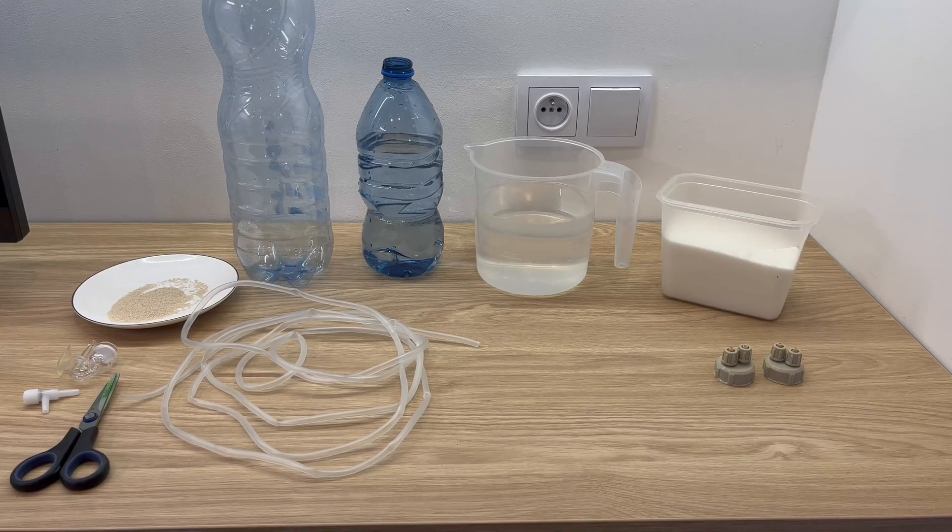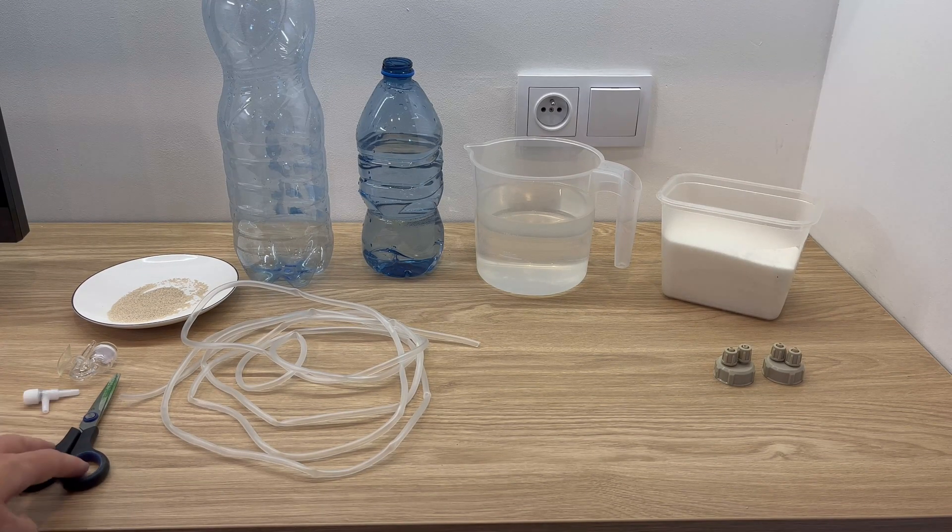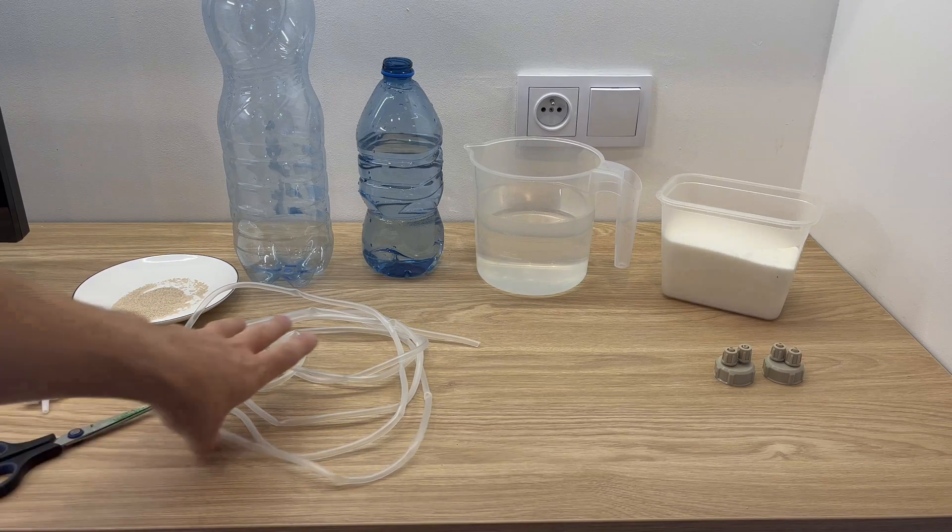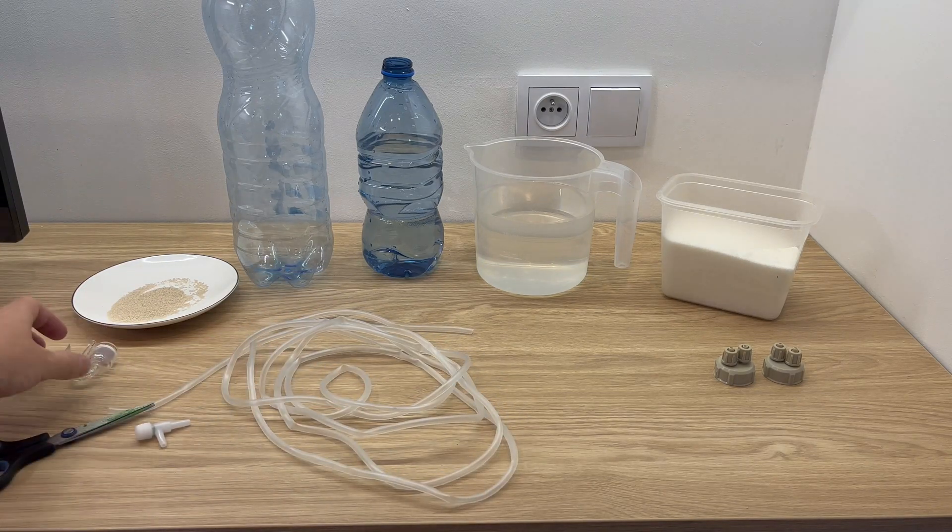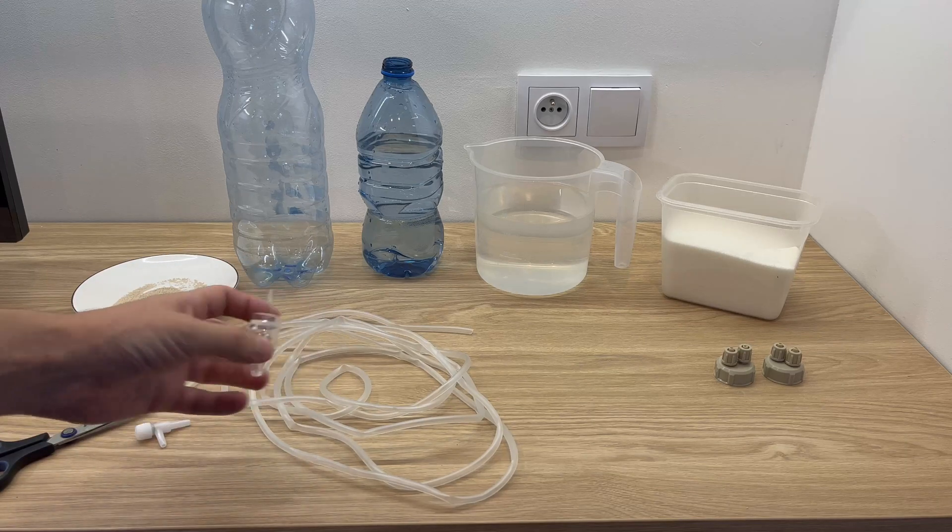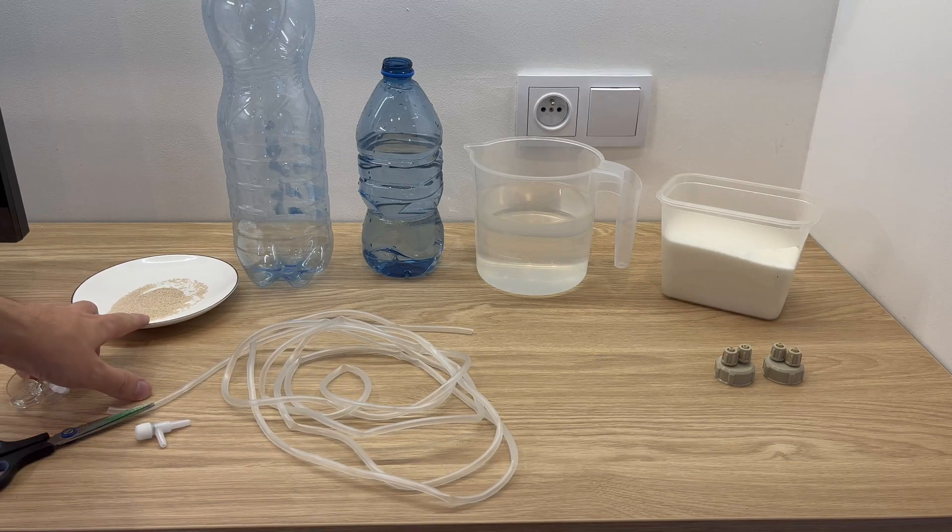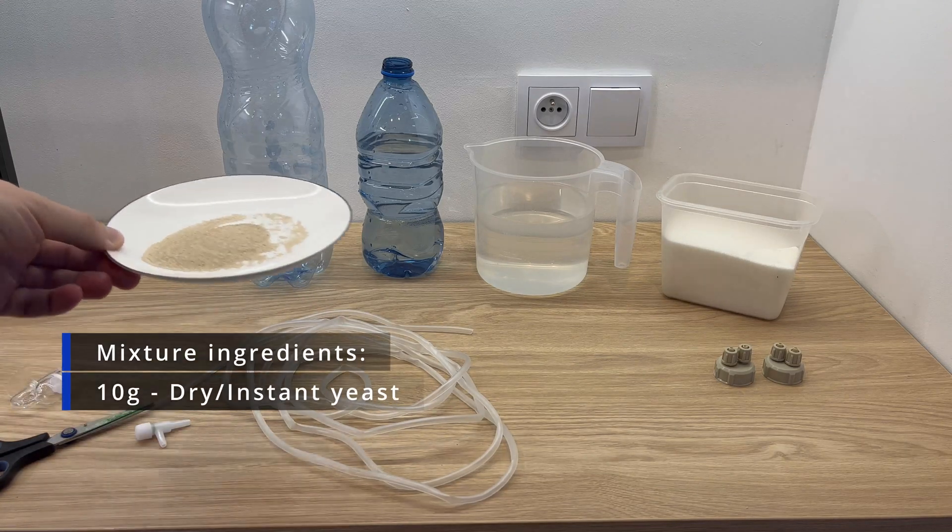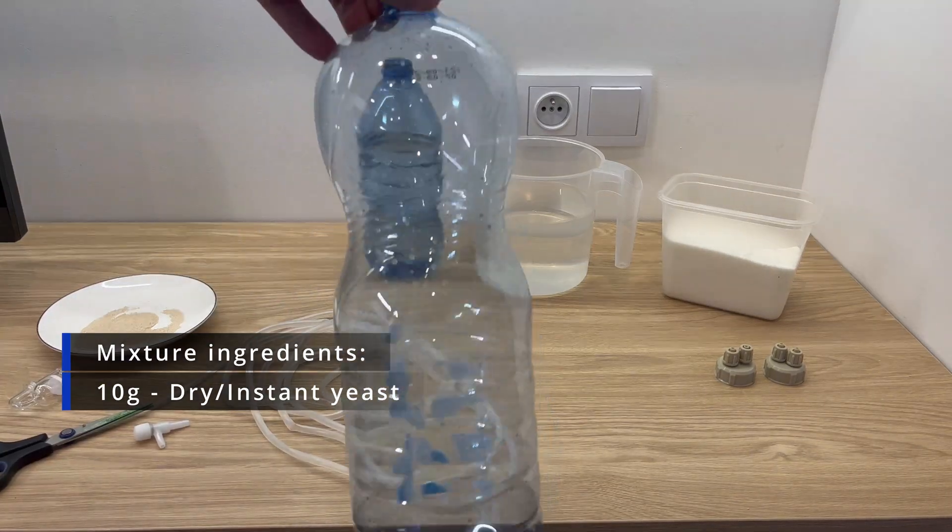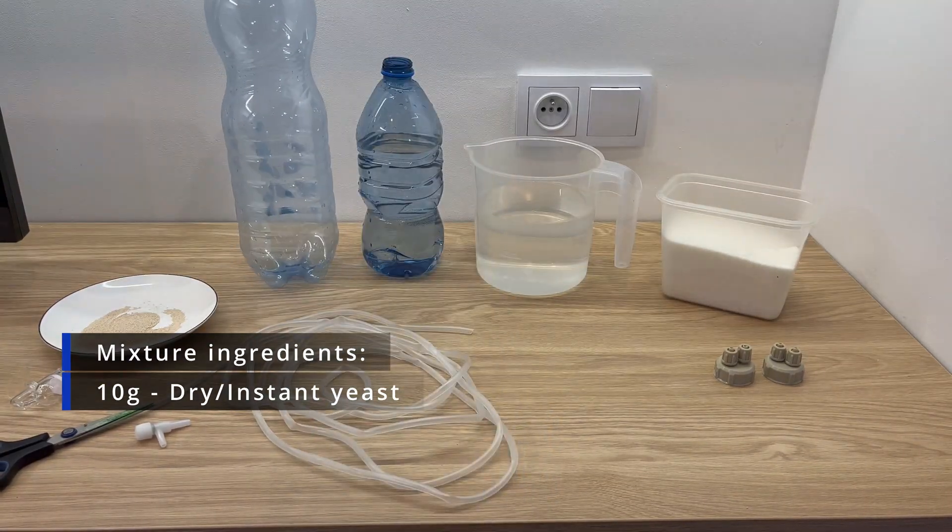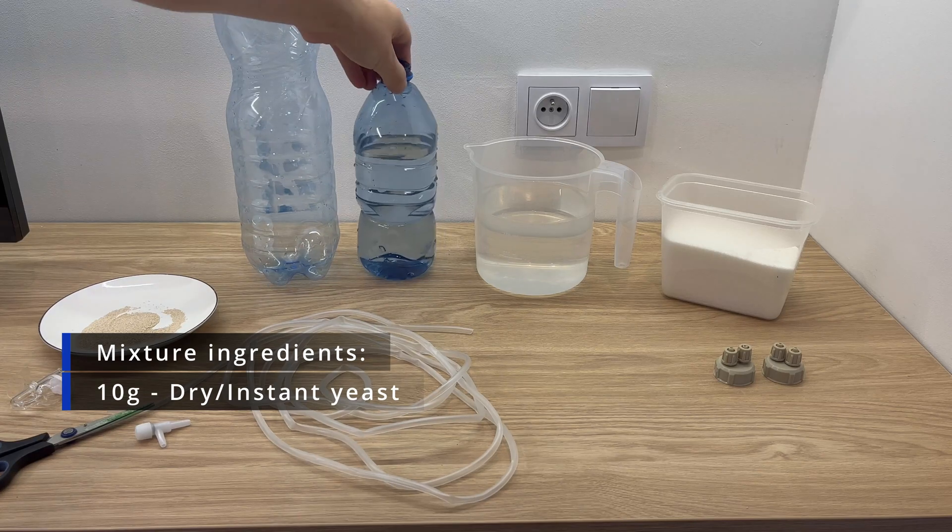When it comes to the equipment, the only thing that you're gonna need is a pair of scissors. Next, you're gonna need some rubber tubing, a common plastic safety valve, a CO2 diffuser, around 10 grams of powdered yeast, one 2 liter plastic bottle, and one smaller one.